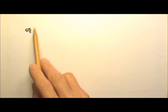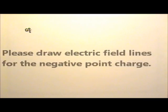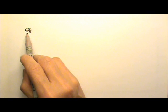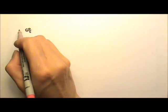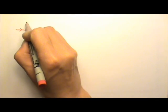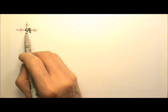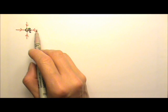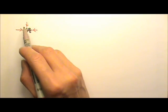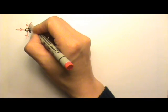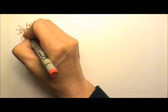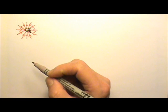Now let's see if you can draw field lines for a point charge negative Q. For a negative charge, the electric field goes into the negative charge, so the field lines should point inward. The lines end on a negative charge. Because there are no positive charges nearby for the lines to originate from, those lines come from infinity. You can certainly add more lines if you want. If you are asked to draw field lines on a test, just make sure you draw enough lines to show the pattern.